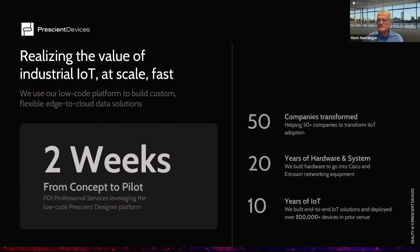Even after the pilot project begins, the solution is very customizable and changes can be incorporated into the experimentation phase of the IoT development in 24 hours or less. So it's a very flexible and fast solution. We've helped about 50 companies — and that list is growing on a daily basis — to go through their industrial IoT journey. We've got a tremendous amount of both system experience and hardware experience. We've developed solutions for all sorts of edge devices, including industrial computers, PLCs, GPUs. We've been in the IoT space for 10 years and have half a million devices deployed.